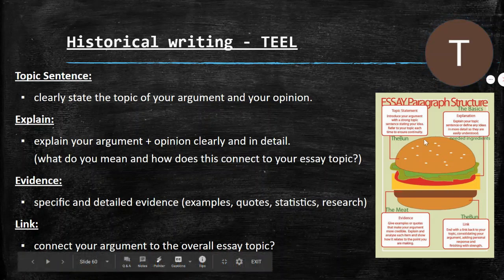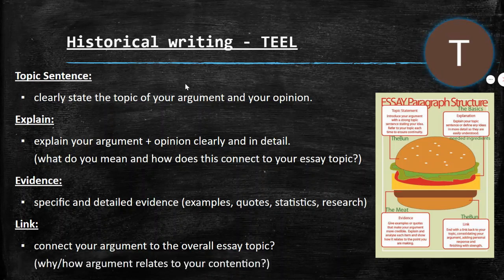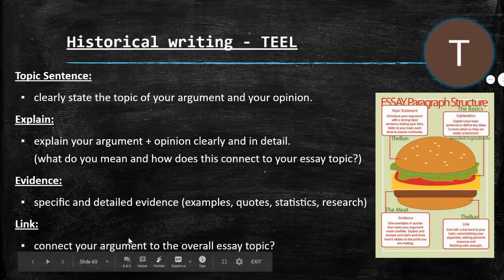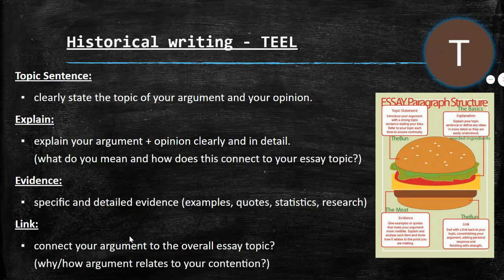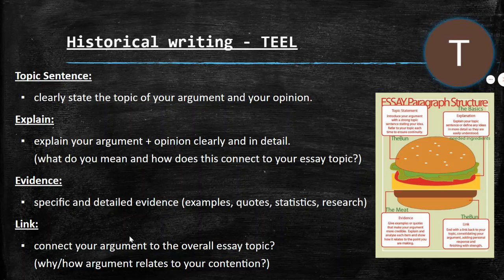Just a fun little graphic shows what TEAL is all about. If you want a mathematical formula: your topic sentence is one sentence, your explain is two to three sentences, your evidence is two to three sentences, and your link is one sentence. So you're looking at somewhere between eight and ten sentences total — not absolutely massive. I'd much rather you write something quality and short than long, boring, and rambling.